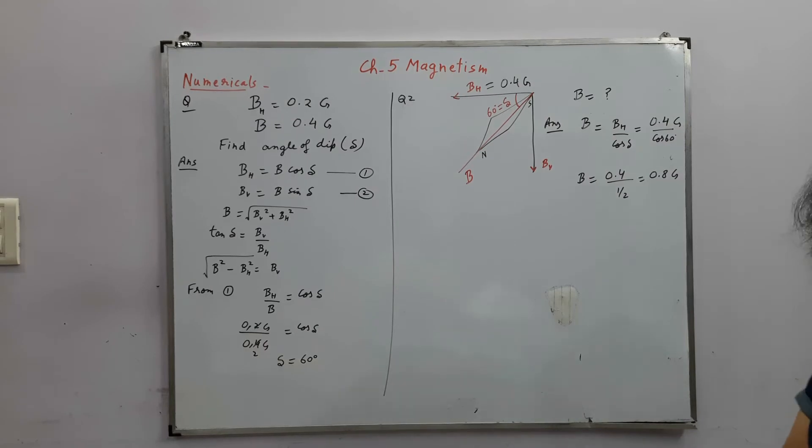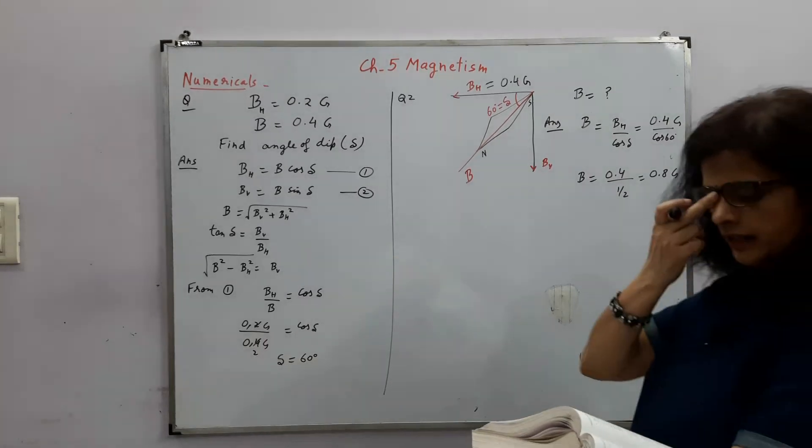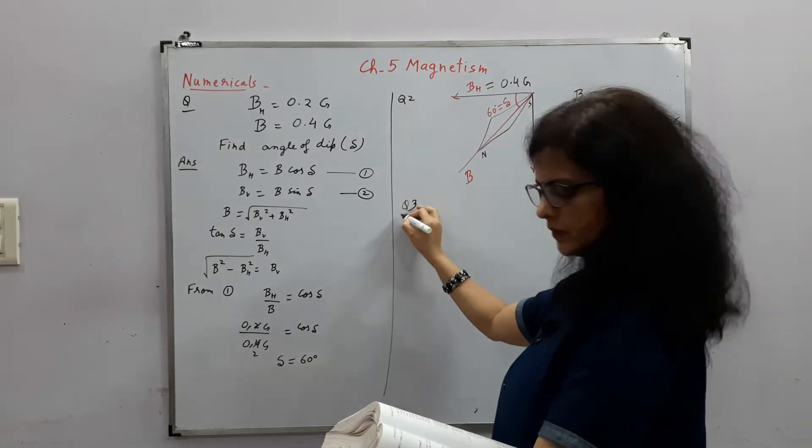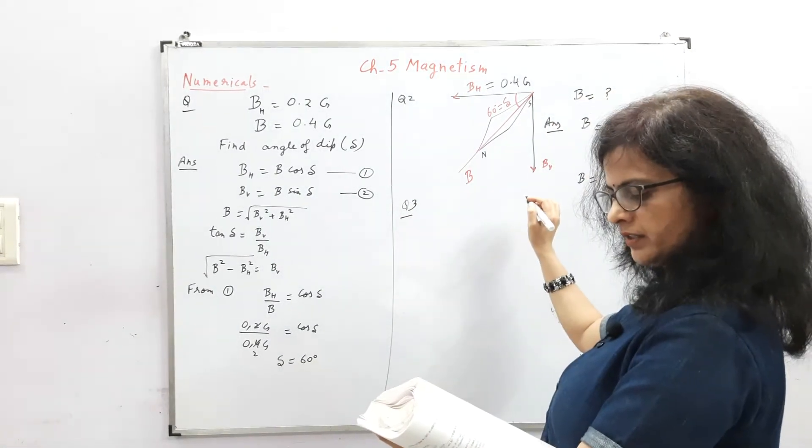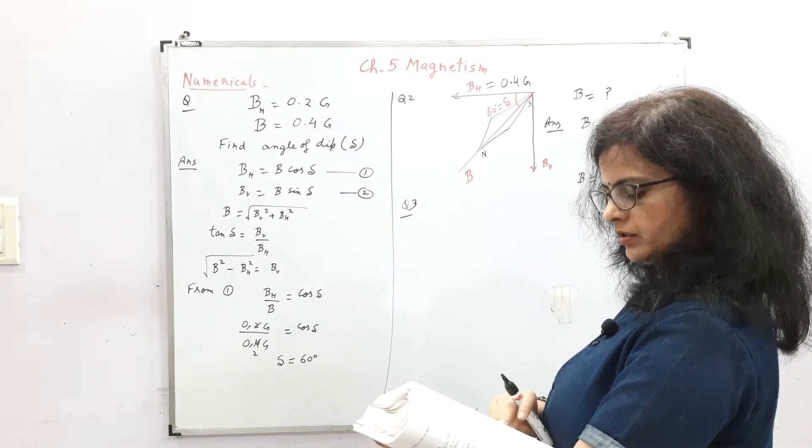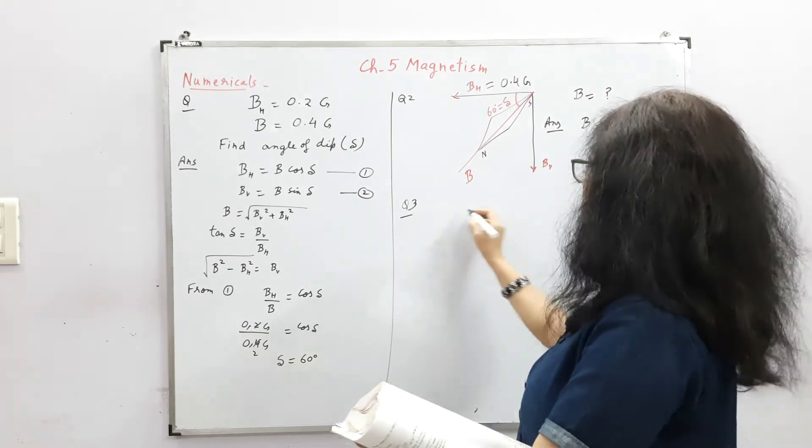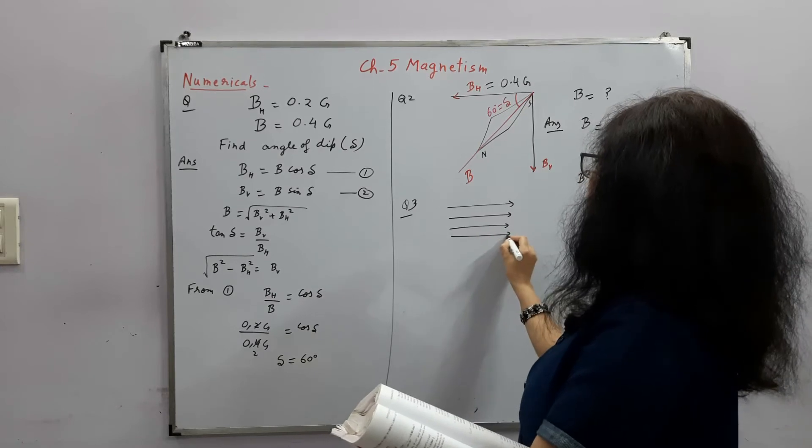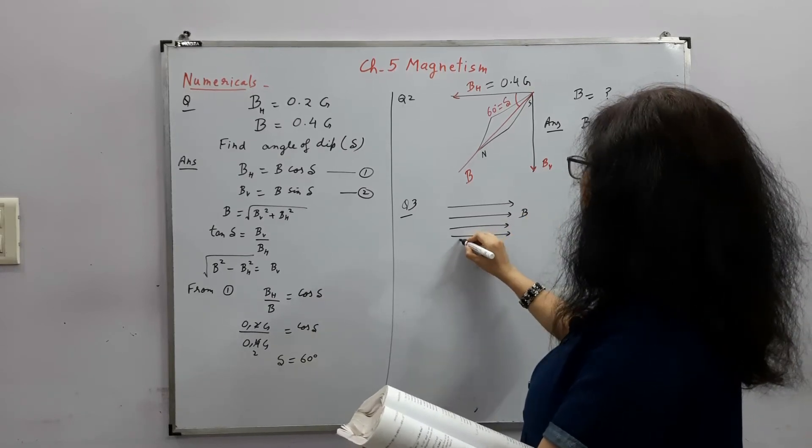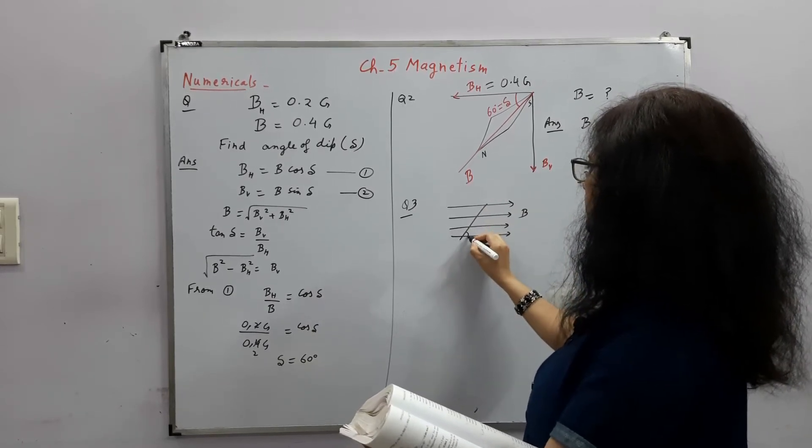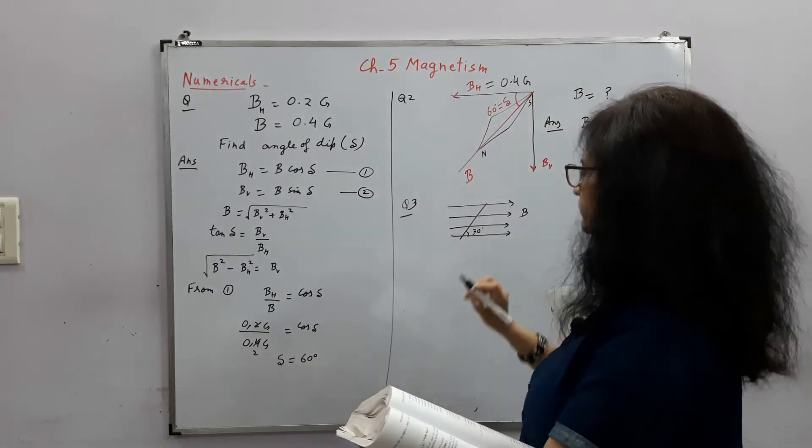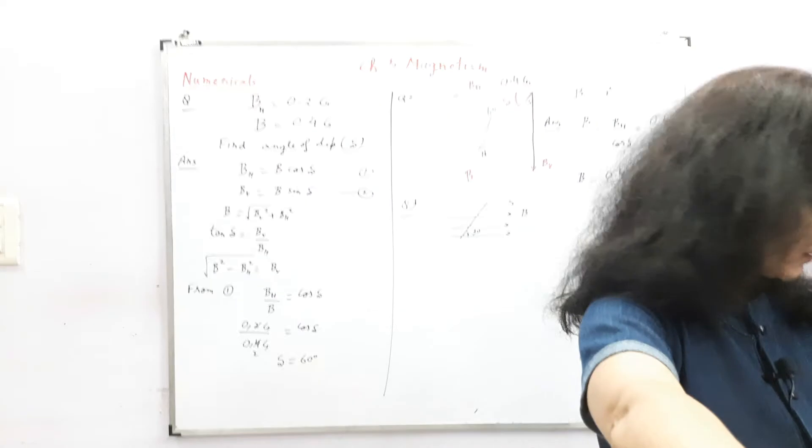A short bar magnet placed with its axis at 30 degree with uniform external magnetic field. So this is the external magnetic field and they are talking about a bar magnet placed at 30 degree with the uniform external magnetic field.